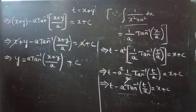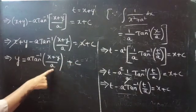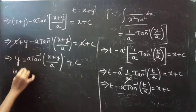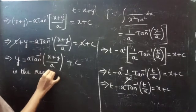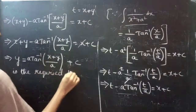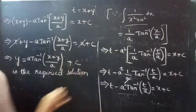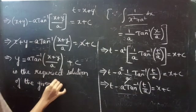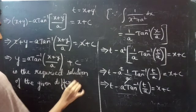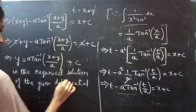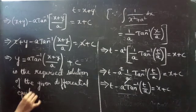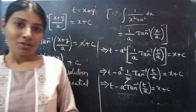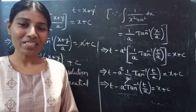Finally, rearranging, we get y = a · tan⁻¹((x + y)/a) + c, which is the required solution. This completes the problem. So we have seen a problem in this video — hope you understand. We will see you in the next video. Until then, bye bye.